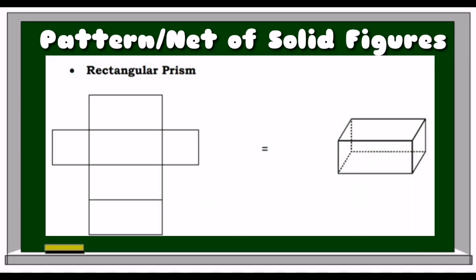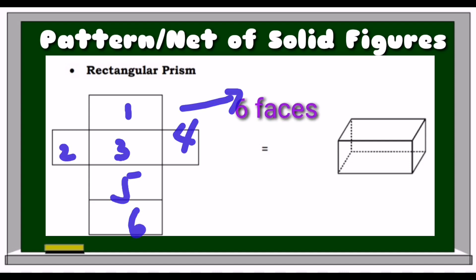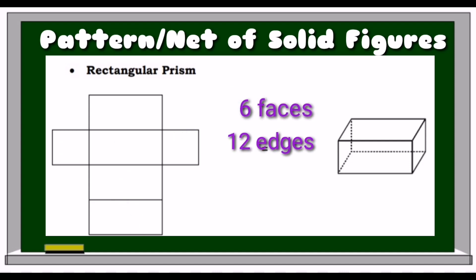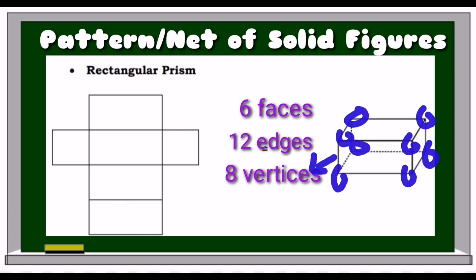This net is for rectangular prism. Like the cube, it also has 6 faces, 12 edges, and 8 vertices.